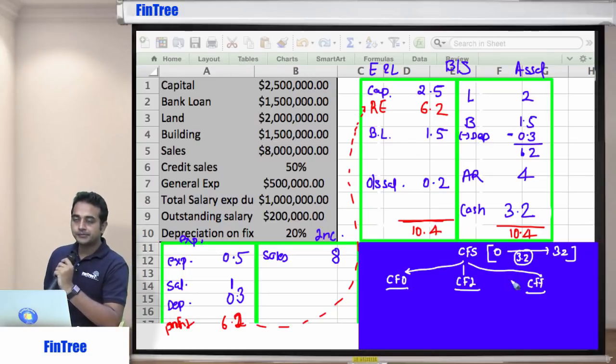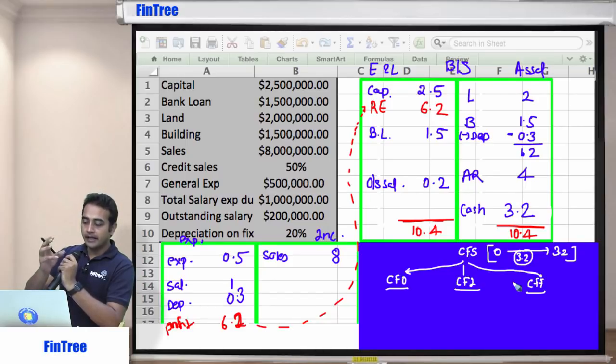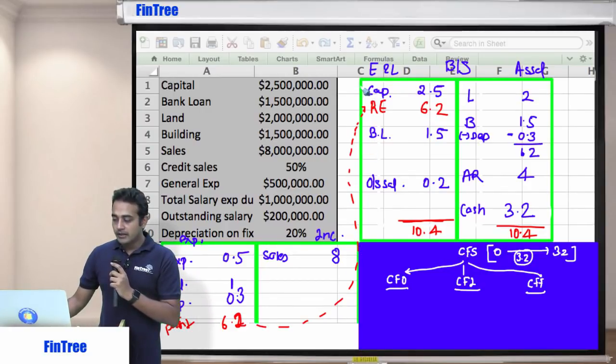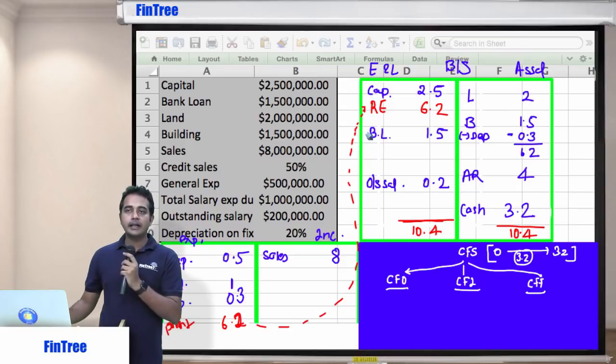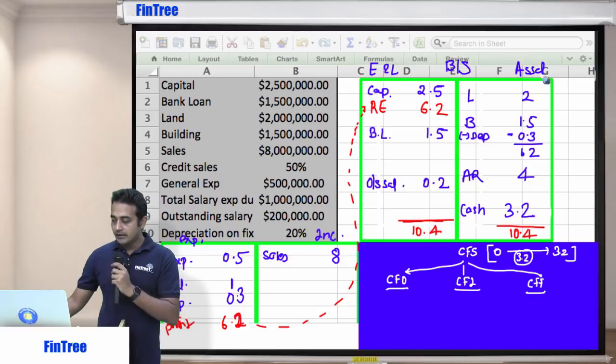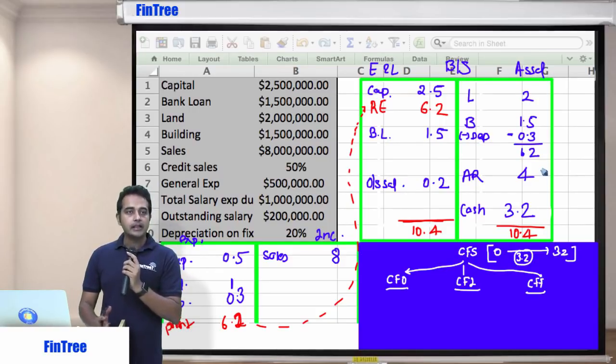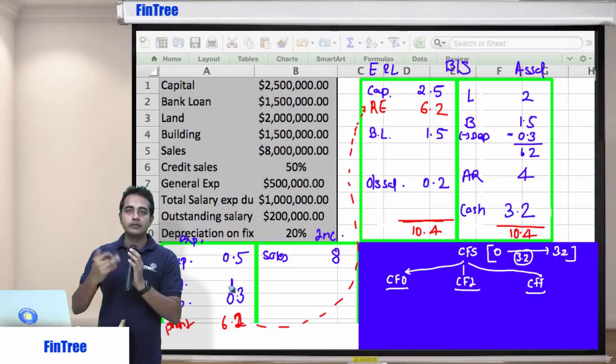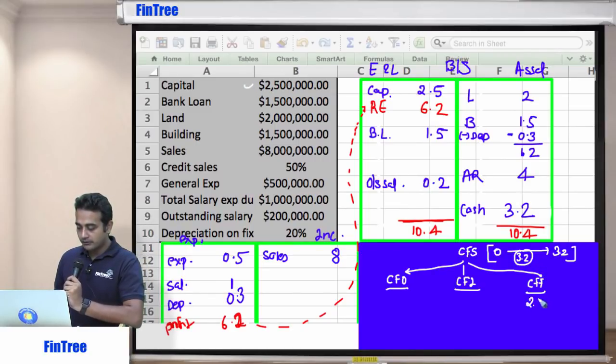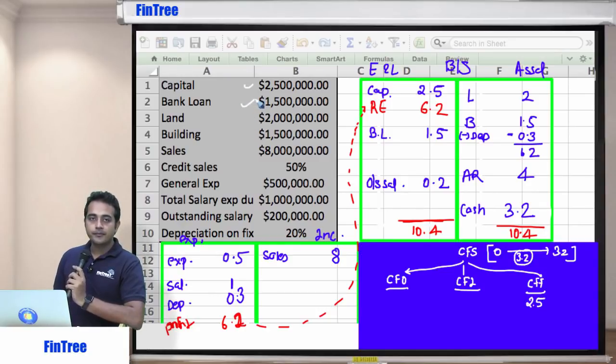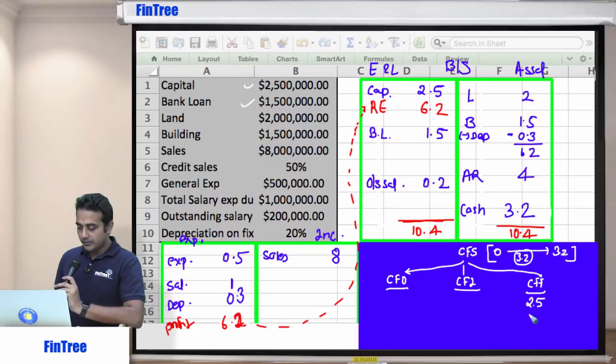Number one, capital. Where should we write this? So raising capital, is it an operating activity or investing or financing? Financing. One easier way to think is, generally those items which are related to this liability section, excluding current liability, those items which are related to liability are generally a part of CFF. Those items which are related to asset side are generally a part of CFI. And those items which typically go on income statement are part of CFO. This would just help you kind of remember things easily. Are we okay? So raising capital, it's a part of financing activity. So positive 2.5. Raising bank loan is? Financing activity again. So this is positive 1.5.